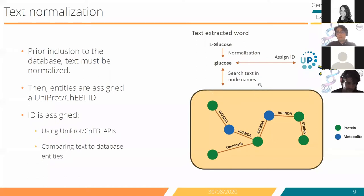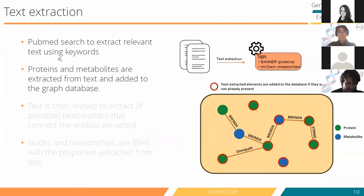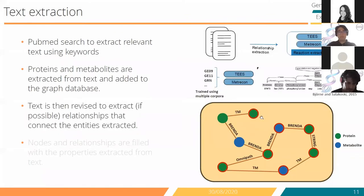This way we can assign a UniProt or ChEBI ID to the element extracted from text. Once the element is assigned an ID, it's introduced to the Neo4j graph database. If this element is already present in the graph database, we maintain the same node — we don't add redundant nodes — and we include the extra information found in text as properties in the node. Once entities are added, the relationships connecting the proteins and metabolites extracted from text are also included in Neo4j.